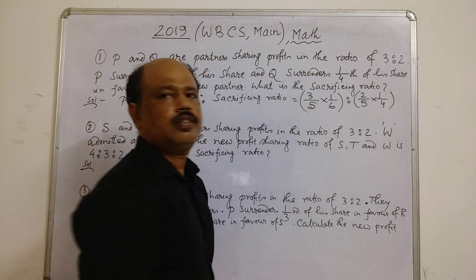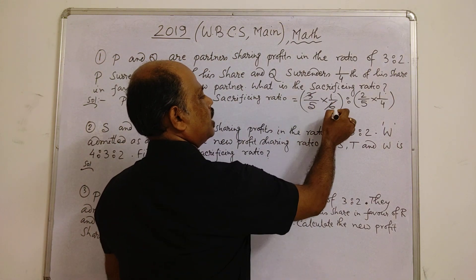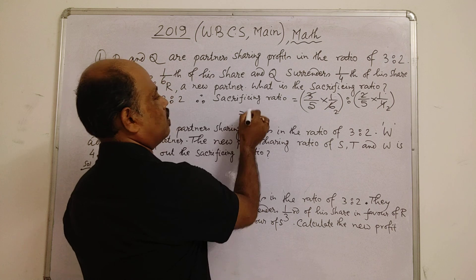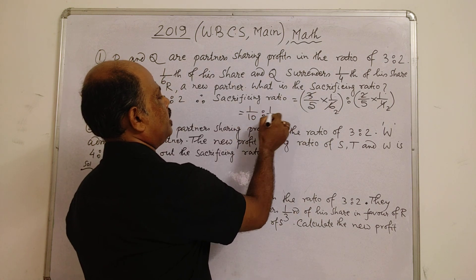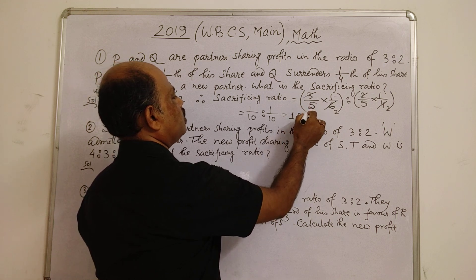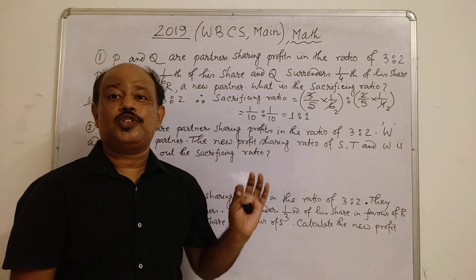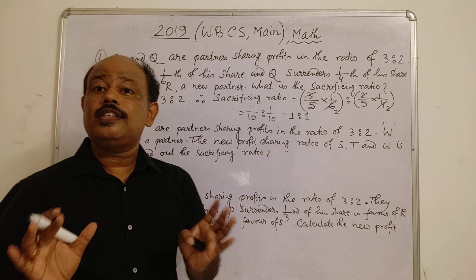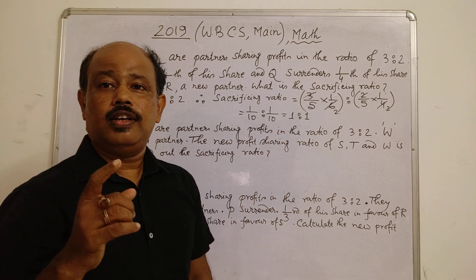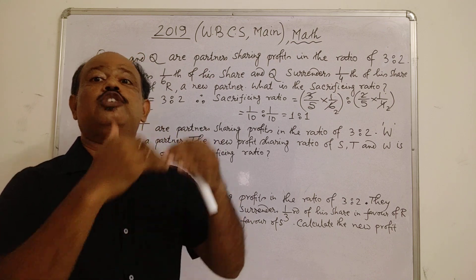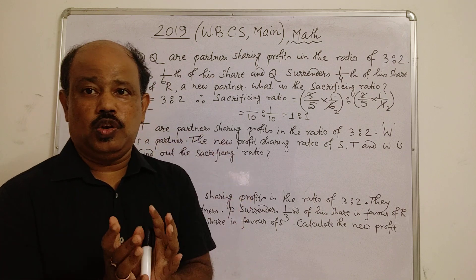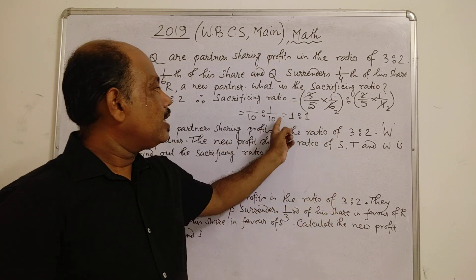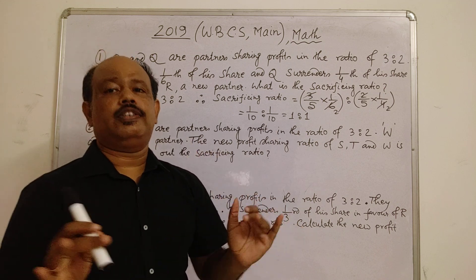Q surrenders 1/4th of that. So Q's sacrifice = 2/5 × 1/4 = 1/10. Both are 1/10. Therefore the sacrificing ratio is 1 is to 1. Very simple. Sacrificing ratio means the ratio of the amounts that P and Q have given to the new partner — that ratio is called the sacrificing ratio. Clear?